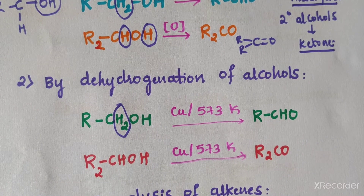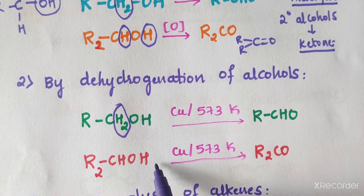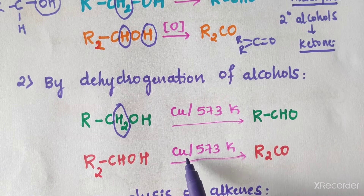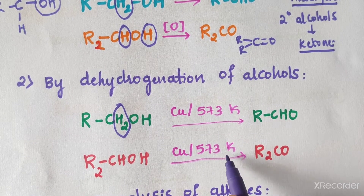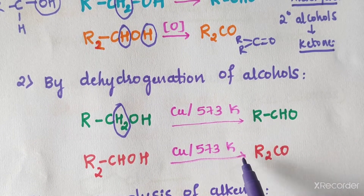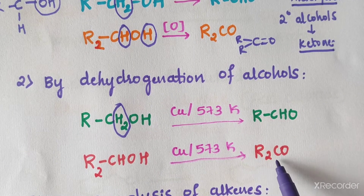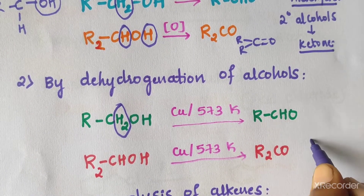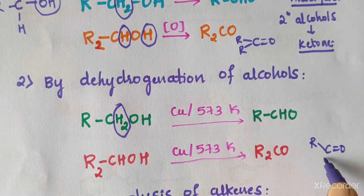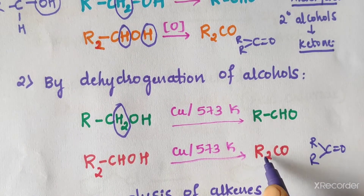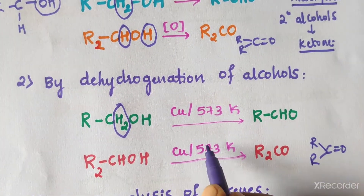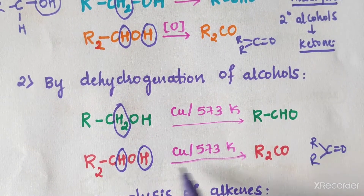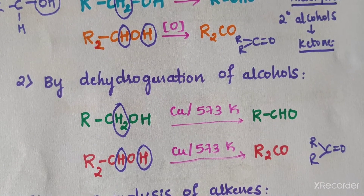In dehydrogenation, a secondary alcohol is treated with silver or copper catalyst heated around 573 Kelvin, and we get ketones. The product is R2C=O — a ketone. This is the same principle as oxidation but achieved by dehydrogenation.